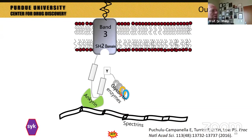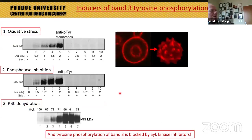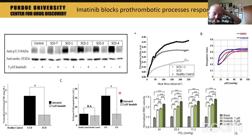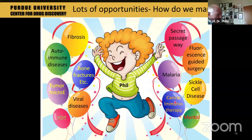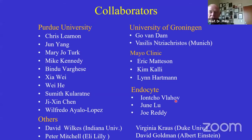We also have a treatment for sickle cell disease. To summarize, we have covered fibrosis, autoimmune diseases, bone fractures, treating the tumor microenvironment, viral diseases, fluorescence-guided surgery, malaria, and cancer immunotherapy. All of these take advantage of targeted medicines. We believe targeted drug delivery is a very important approach for the future because it eliminates off-target toxicity — or greatly reduces toxicity to healthy tissues — while enhancing potency in disease tissue by concentrating the drug there.